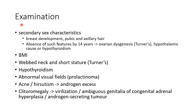Now let us see about the examination findings in primary amenorrhea. Secondary sexual characteristics should be noted — these include breast development and pubic and axillary hair. Absence of these features by 14 years indicates ovarian dysgenesis such as Turner syndrome, hypothalamic cause, or hypothyroidism. Body mass index should be measured. Webbed neck and short stature should be looked for, as these are present in Turner syndrome.